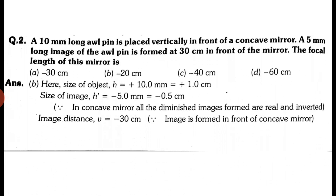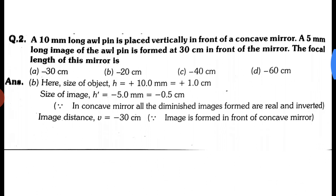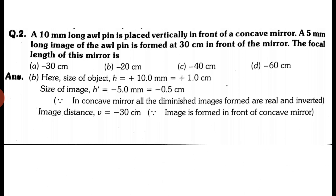The first formula is f equals to r divided by 2. This is the relation between focal length and radius of curvature. The second formula is 1 by f equal to 1 by v plus 1 by u. Here f is focal length, v is image distance, u is object distance.